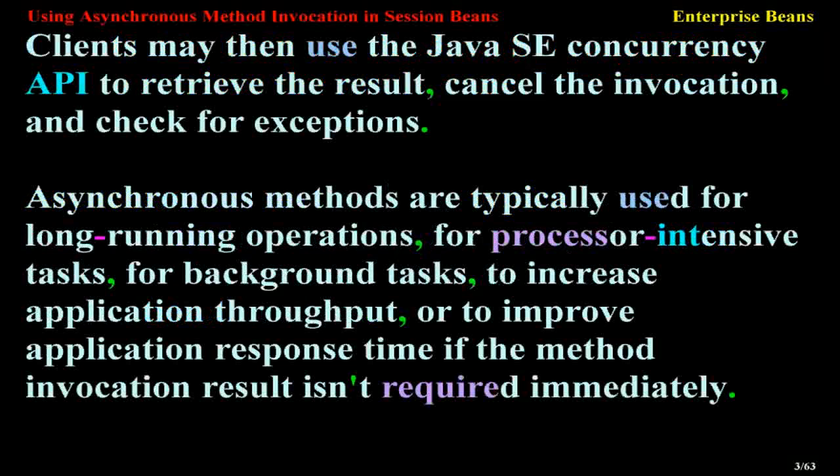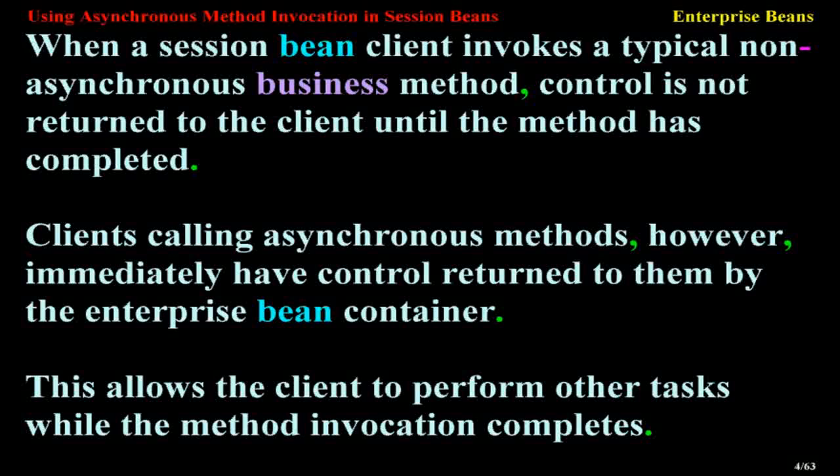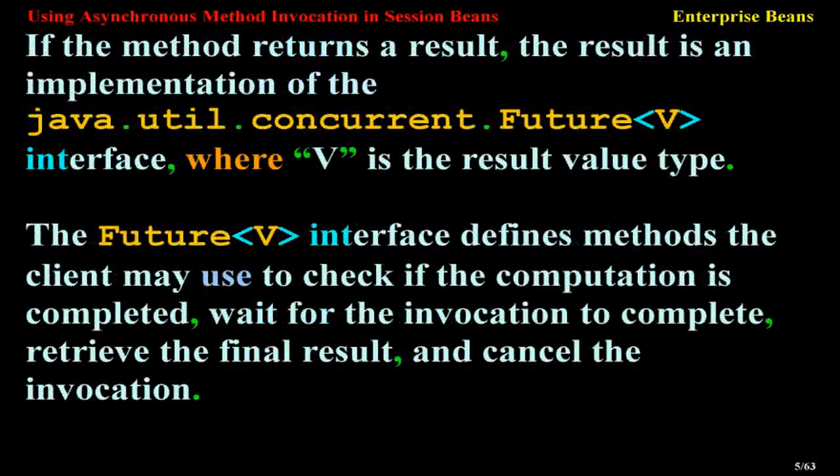When a Session Bean client invokes a typical non-asynchronous business method, control is not returned to the client until the method has completed. Clients calling asynchronous methods, however, immediately have control returned to them by the Enterprise Bean container, allowing the client to perform other tasks while the method invocation completes. If the method returns a result, the result is an implementation of the Java Util Concurrent Future<V> interface, where V is the result value type.